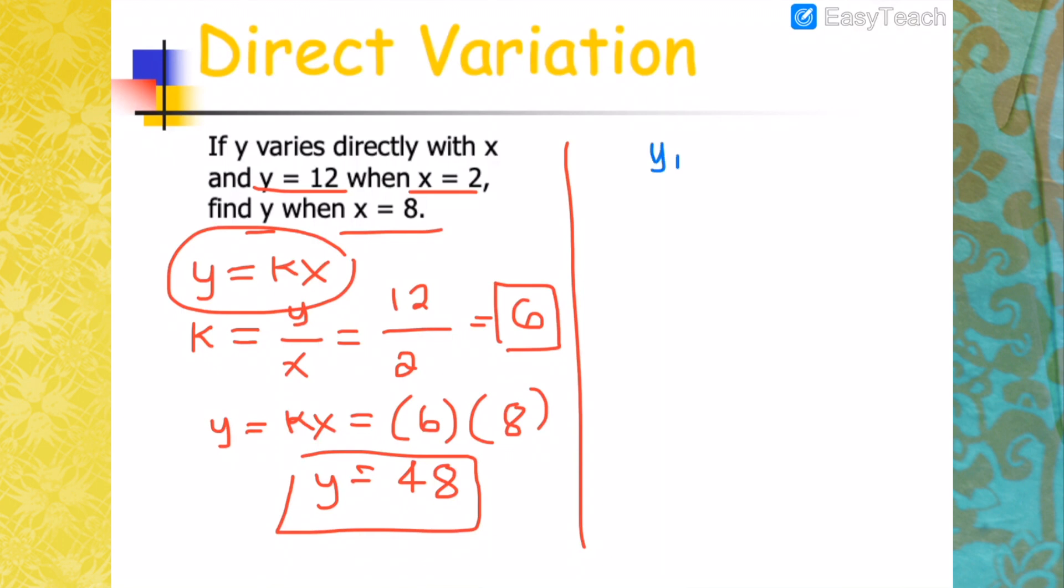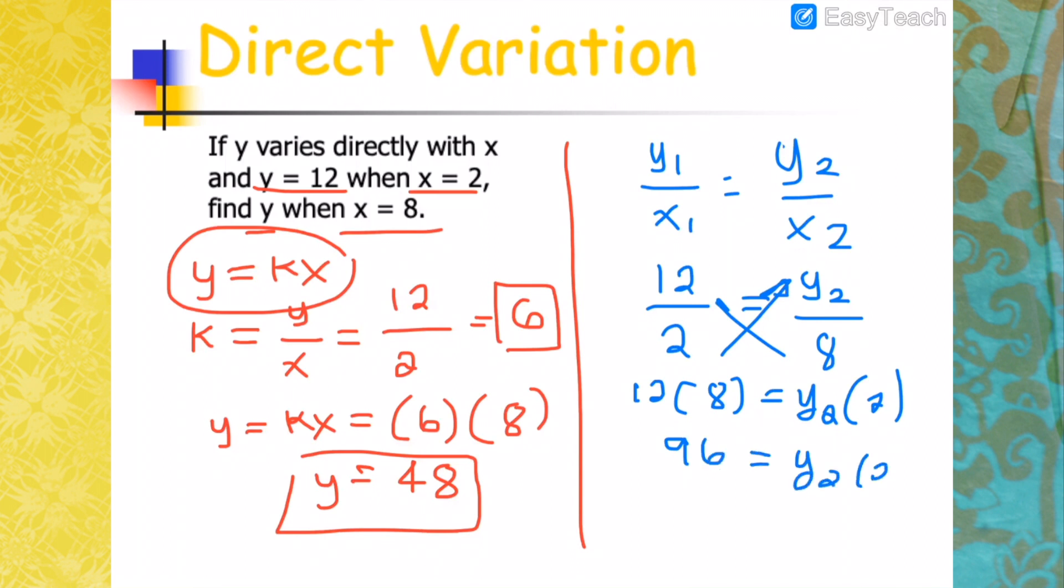And the other way of doing it, you will have Y1 over X1 equals Y2 over X2. Substituting Y1 is 12 when X is 2. Find Y2 when X is 8. Next step, cross multiply. So you will have 12 times 8 equals Y2 times 2. Multiplying 12 by 8, you'll get 96. 96 equals Y2 times 2. Dividing 96 by 2, you will get 48, which is the same answer either way.